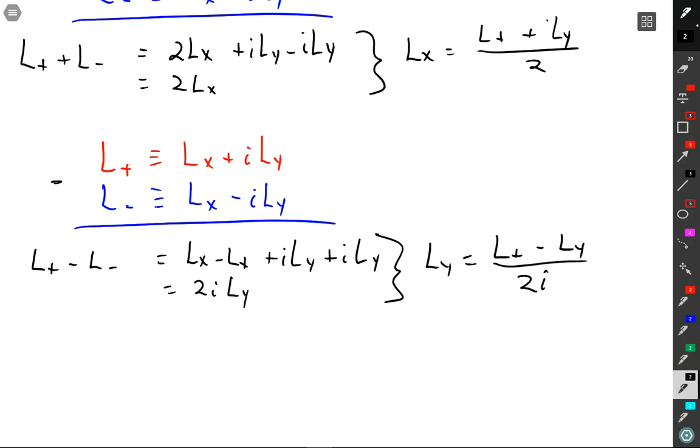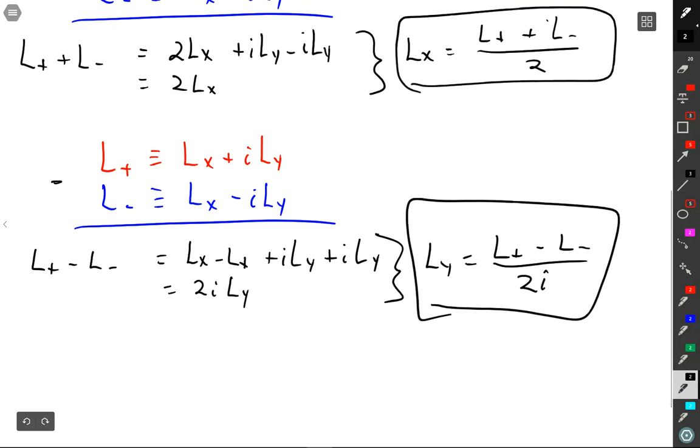And then if I want LY, I just go through the same work, but now I'm going to subtract them. So before I had added them, if I subtract them, then I will have... And so I've just recast my LX and my LY in terms of the ladder operators. Shouldn't both of those terms be L minus, not LY? Yes.